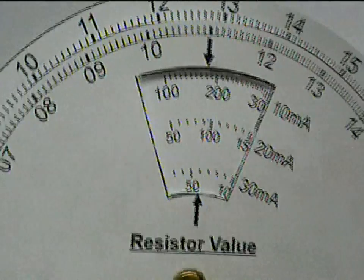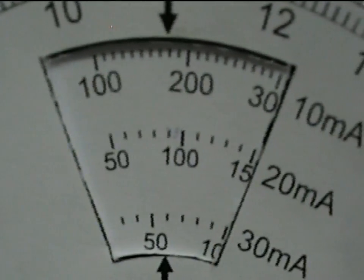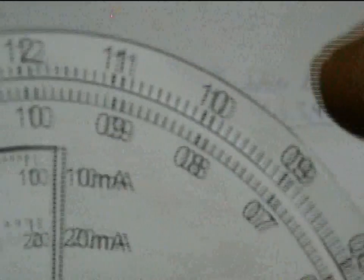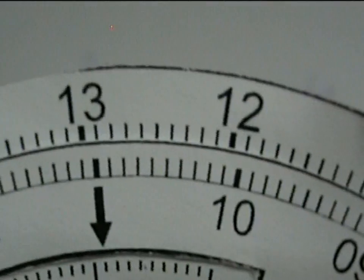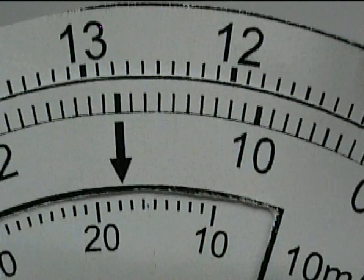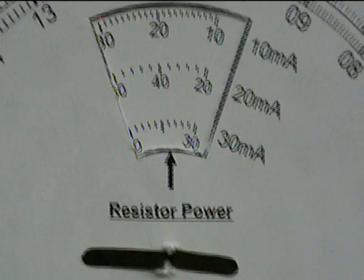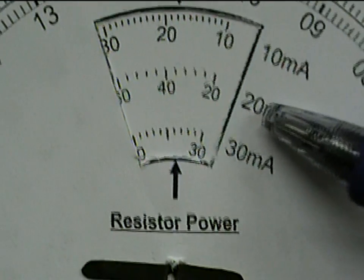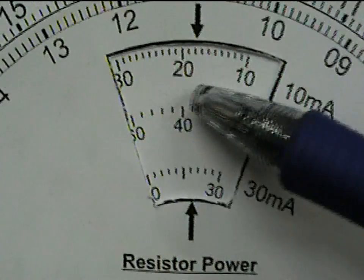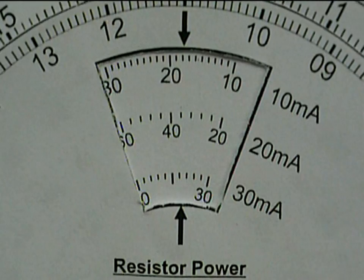Then we flip the side of the selector and make sure that the voltages are still aligned. And now we can read the power rating of the resistor. In our example for 20 mA the resistor must be able to dissipate about 40 mW of power.